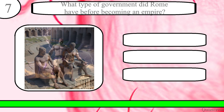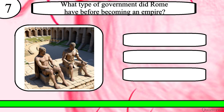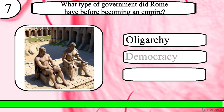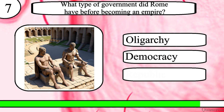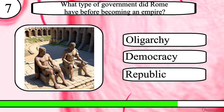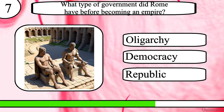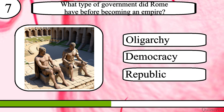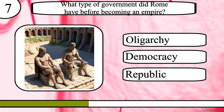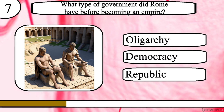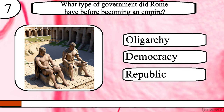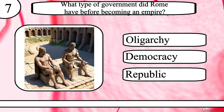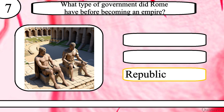Question 7. What type of government did Rome have before becoming an empire? Oligarchy, democracy or republic? The correct answer is republic.